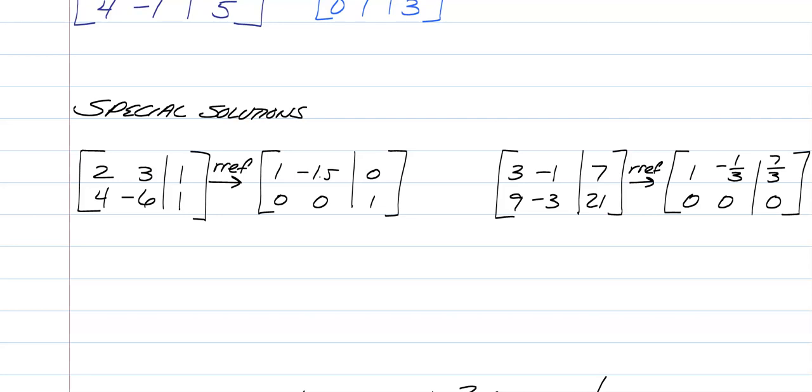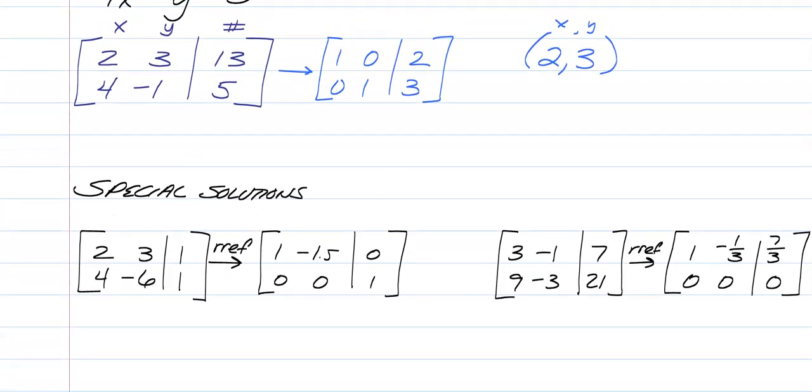So one of the special cases is basically when you get to the end, when you have that identity matrix like I showed you in the previous problem, the 1, 0, 0, 1, basically 1s are going diagonal and everything else is 0s, that means you actually have a solution. This means your x is equal to 2 and your y is equal to 3.